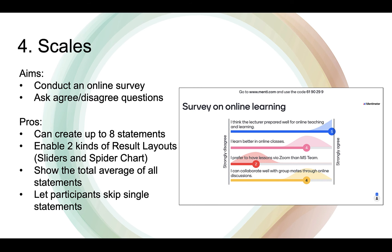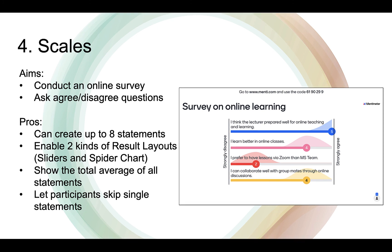You may select the scale question type for conducting an online survey and asking agree or disagree questions. You can create up to 8 statements and decide to show or not show the total average of all statements, and allow or not allow participants to skip single statements.